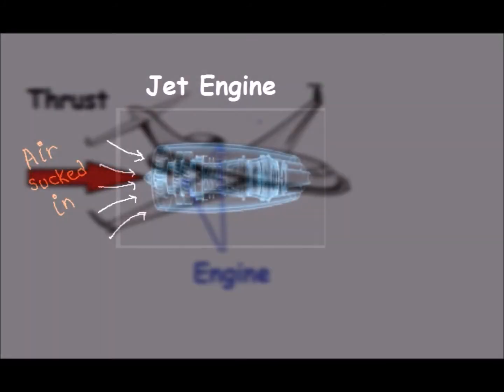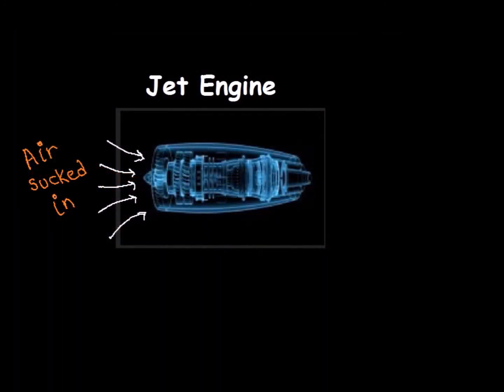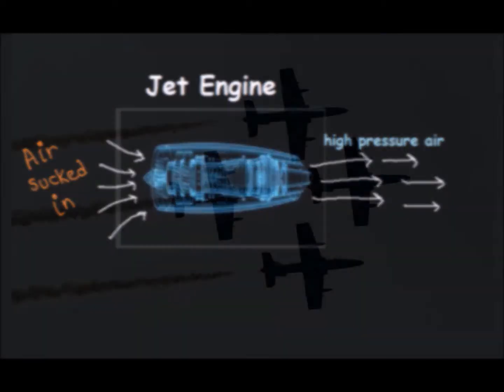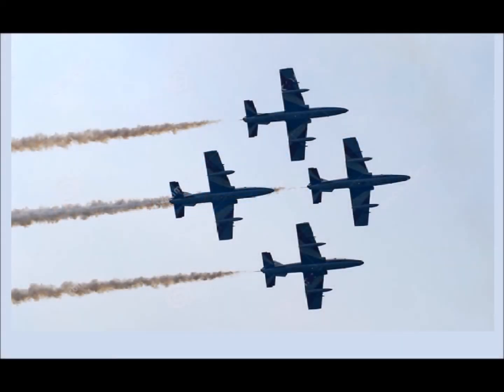In the engine, air is sucked in by the compressor. This air is exhausted at high pressure from the back of the engine. That pushes the jet plane in the forward direction. When the thrust produced is greater than drag, jet planes move forward.